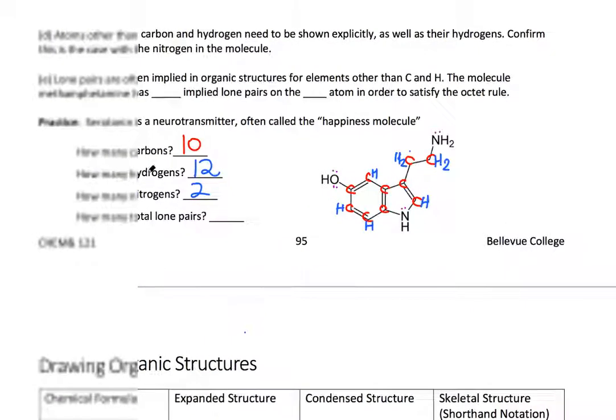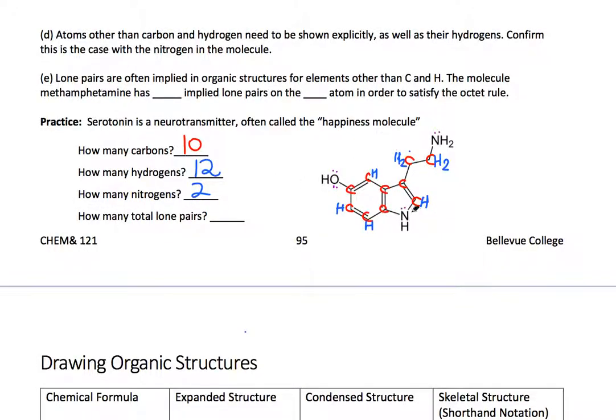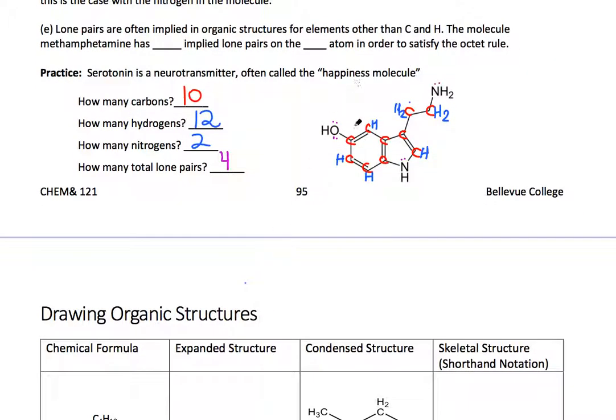Okay, so in terms of how many total lone pairs? One, two, three, four lone pairs. All right. So when we say implied, we mean the carbons and hydrogens are not explicitly shown, so we need to think of them as being there.